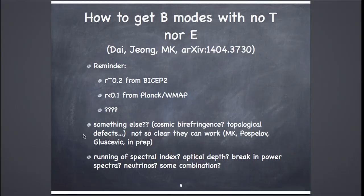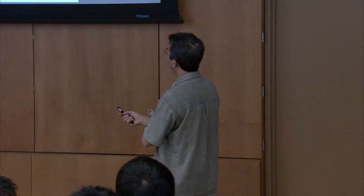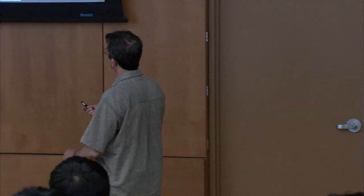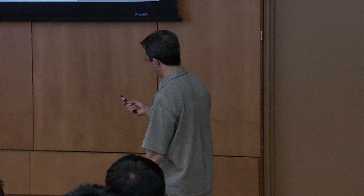The motivation is the observation that R is about 0.2 from BICEP2, and the observation from Planck and WMAP that R, subject to certain assumptions, is less than 0.1. Various papers have considered ideas like running the spectral index, optical depth, and breaking the power spectrum. You might also wonder whether other mechanisms to produce B modes — cosmic birefringence, topological defects — could be responsible for this excess. Without going into details, it's very difficult, because most of these mechanisms predict more B modes on small scales; if you have enough B modes at L of 80 to account for BICEP2, you wind up producing a lot more on smaller scales as well.